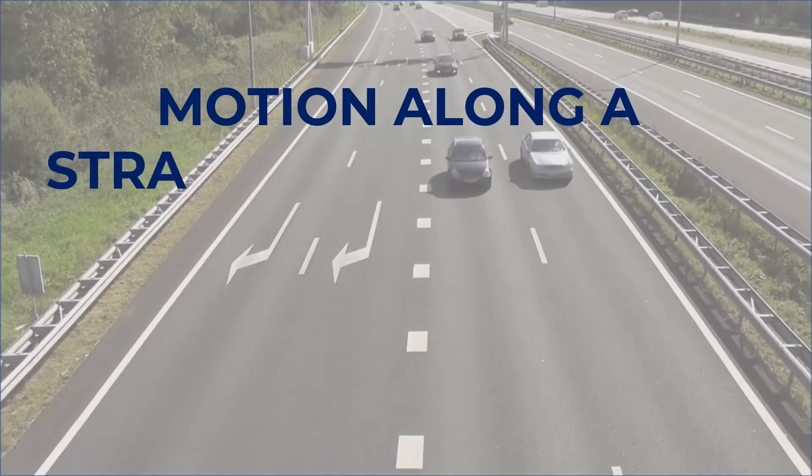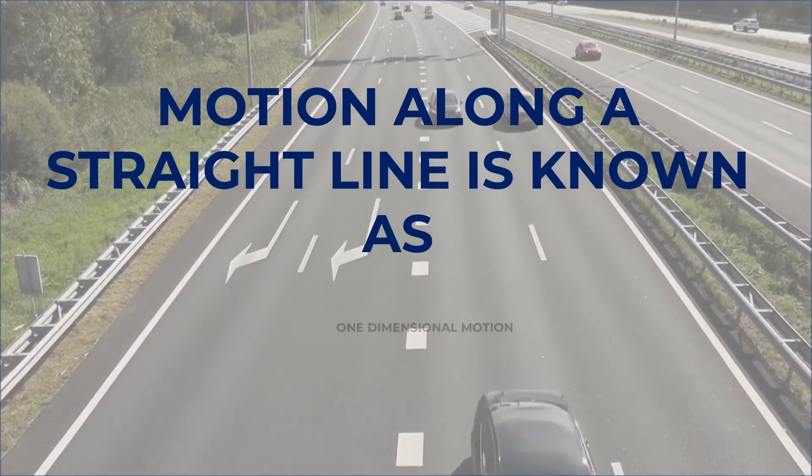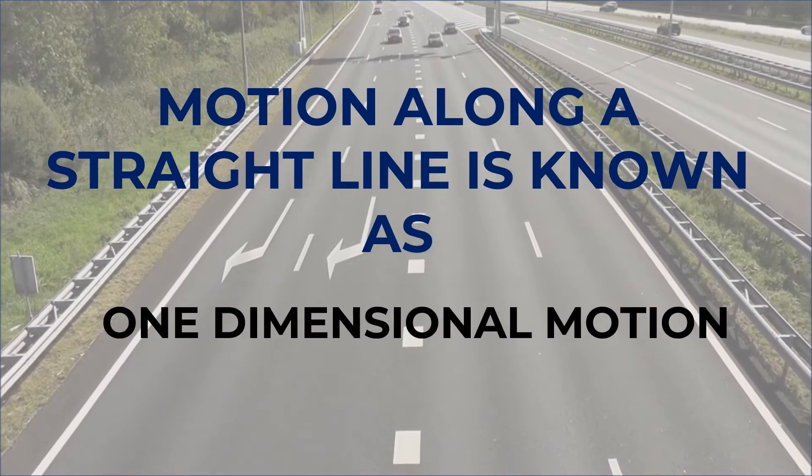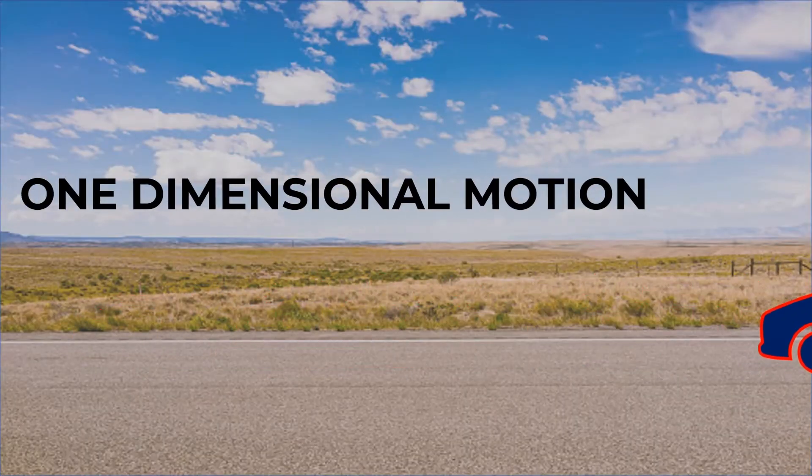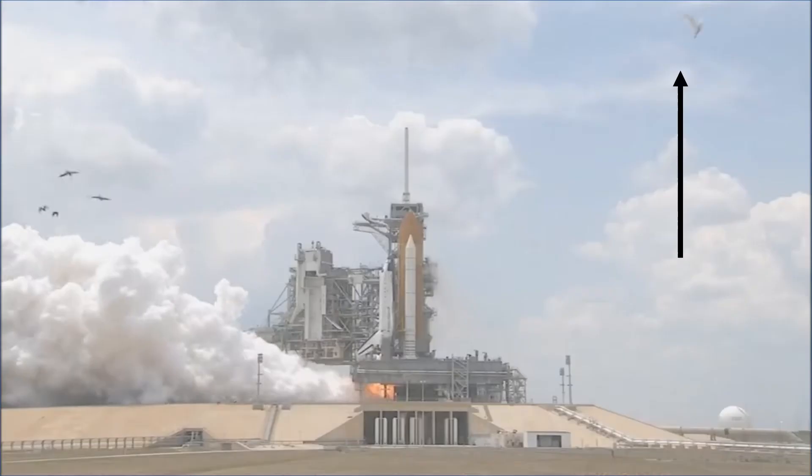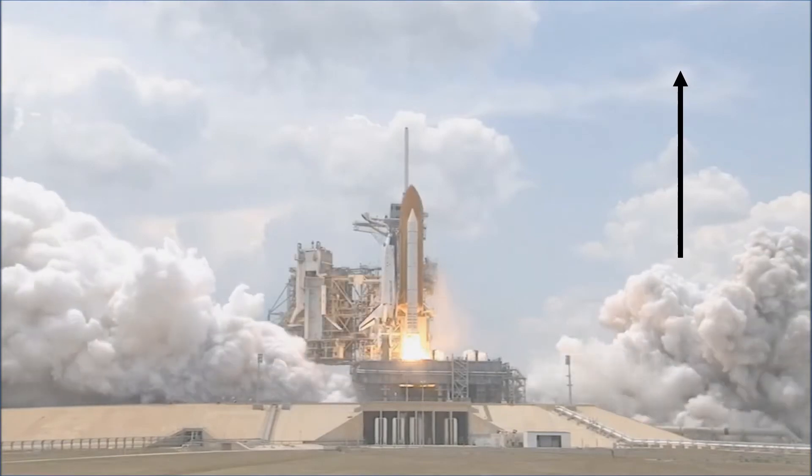Let's start with one-dimensional motion. Motion along a straight line is known as one-dimensional motion. Here the direction of motion is fixed along the given straight line. For example, a car moving on the road or a rocket just after its launch moves along a specific direction for some time.